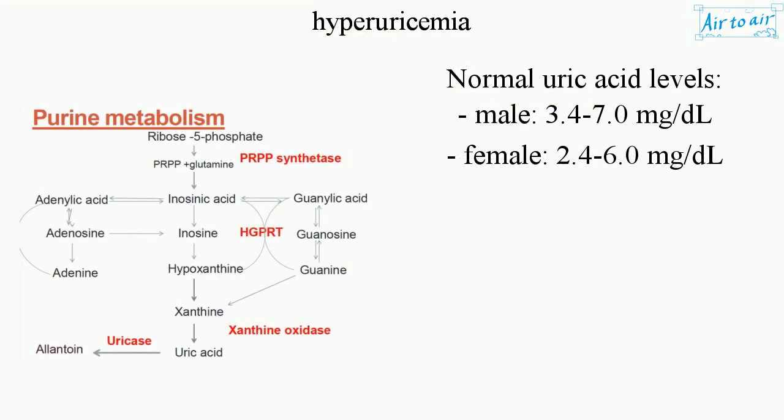Normal uric acid levels: male, 3.4 to 7.0 mg per deciliter; female, 2.4 to 6.0 mg per deciliter.